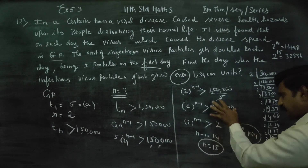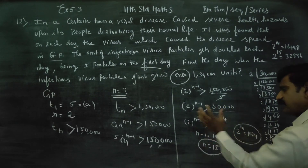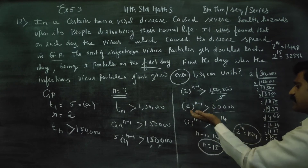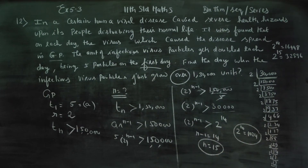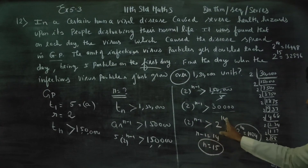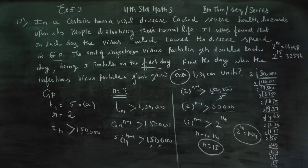This is the less-than symbol, and this side is always greater than. That's why n-1 equals 14 is correct. You can do it in two methods, but this is the best method — easy and you can do it. So n-1 equals 14 and n equals 15. The condition is satisfied: on the 15th day, the virus particles will cross 1,50,000. That's all, thank you.